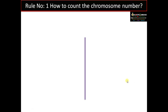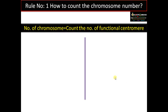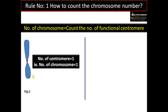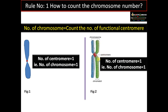Rule number one: how to count the chromosome number. The number of chromosomes is equal to the number of functional centromeres. Here you can see this chromosome has one centromere, therefore the chromosome number is one. After S phase, this chromosome is duplicated and now has two chromatids held at the centromere, but the number of centromeres is still one, so the chromosome number remains one.